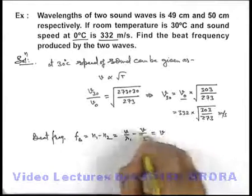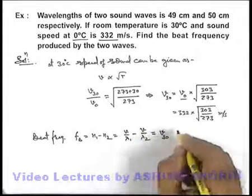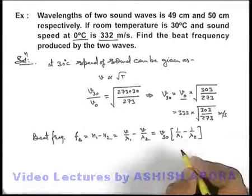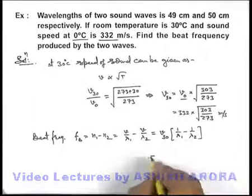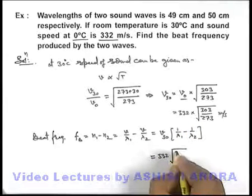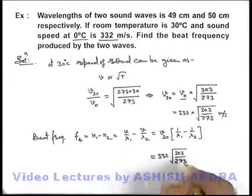Which will give us v at 30 degrees centigrade multiplied by 1 by lambda 1 minus 1 by lambda 2. We substitute the values, speed at 30 degrees centigrade is 332 square root of 303 by 273.